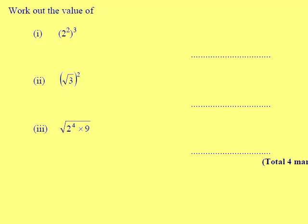When indices are in brackets, we multiply them. That's the same as 2 to the power of 2 times 3, so my answer will be 2 to the power of 6. For the square root, I'm doing the opposite of square rooting, which is squaring, so it cancels out.